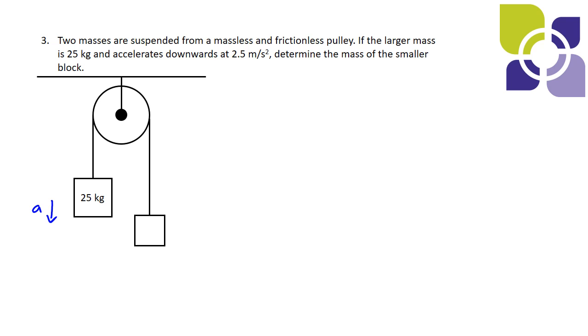If the other one is accelerating downwards it means this block must be accelerating upwards. So the rope or the system is accelerating around the pulley in this counterclockwise direction and this direction we want to consider to be the positive direction in the system because it's going to make all our math easier.